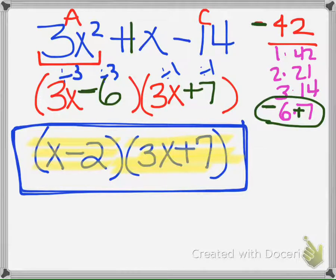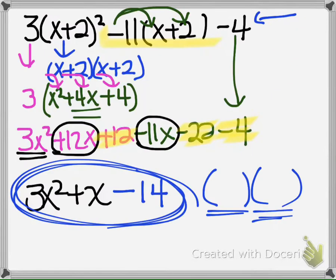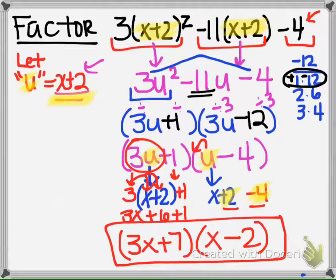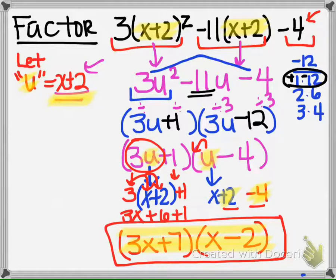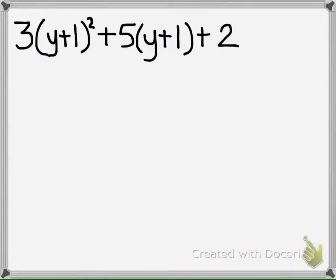And now keep in mind that this x minus 2 times 3x plus 7 is our answer. If we go back to the first way we did it, that is the same thing we get from doing the u-substitution. So let's take a look at one more example here.